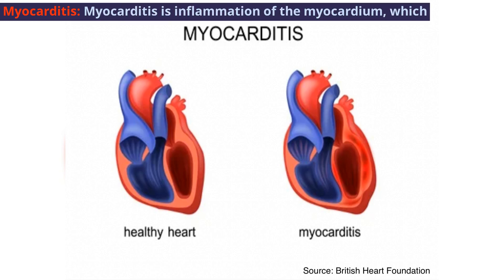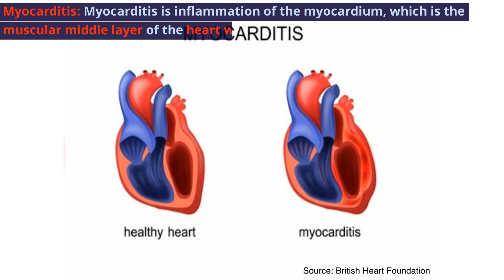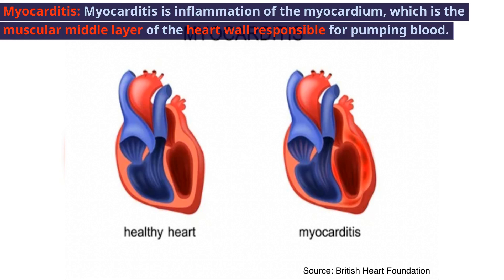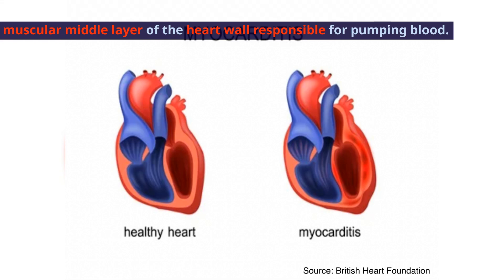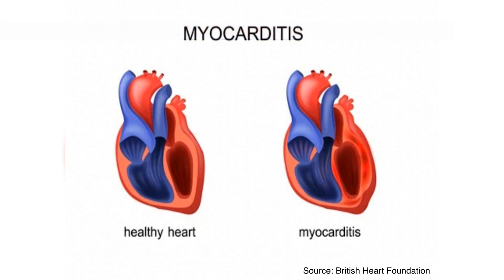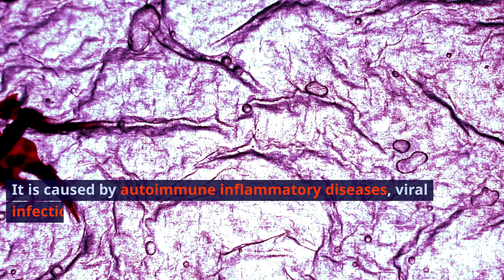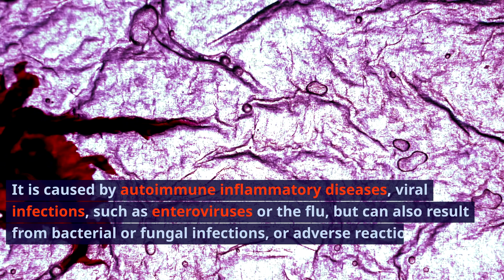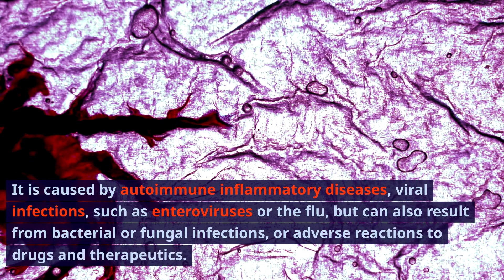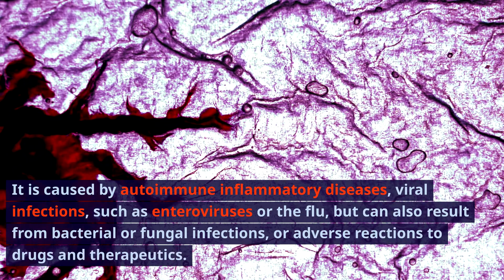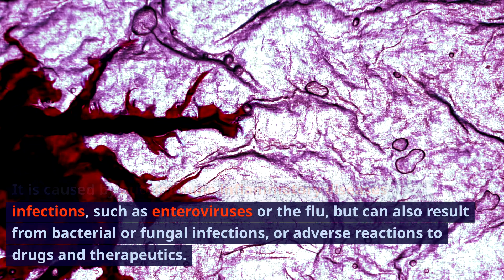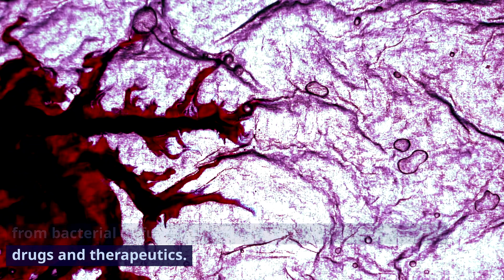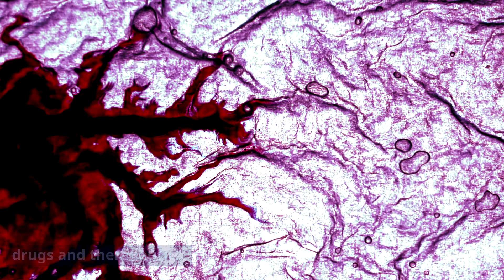Let's start with myocarditis. Myocarditis is inflammation of the myocardium, which is the muscular middle layer of the heart wall responsible for pumping blood. It is caused by autoimmune or inflammatory diseases, viral infections such as enteroviruses or the flu, but can also result from bacterial or fungal infections or adverse reactions to drugs and therapeutics.